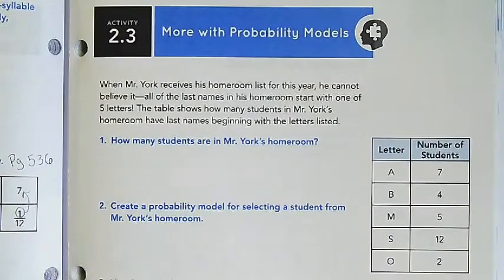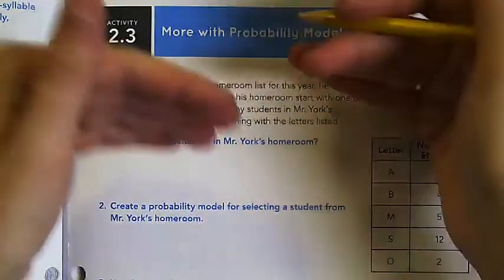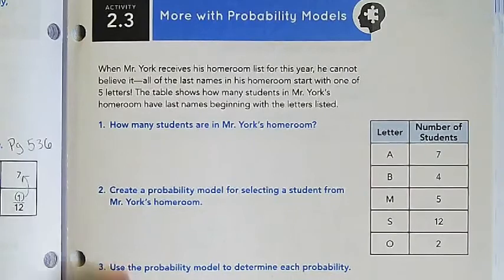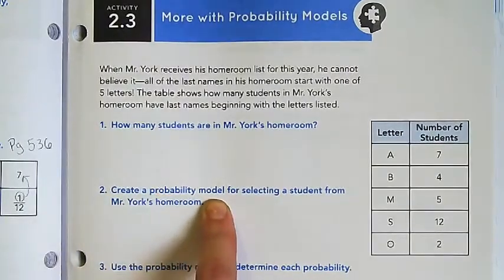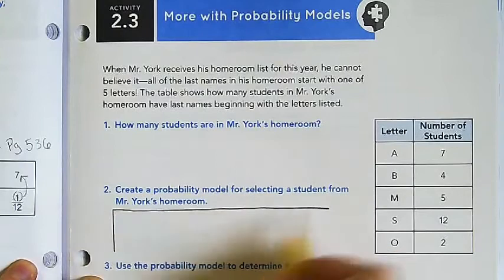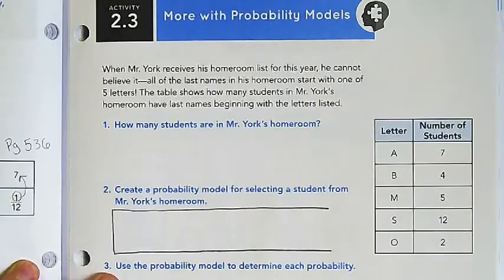Lesson 2, Activity 2.3: More with Probability Models. You are going to do this activity on your own. You can work with your group, but I'm not going to lead you through it. If you need help, I'll help you, but I'm not going to walk you through. Read the situation and answer these questions. When you get to number two, it's asking you to create a probability model. You are actually going to draw out that model.